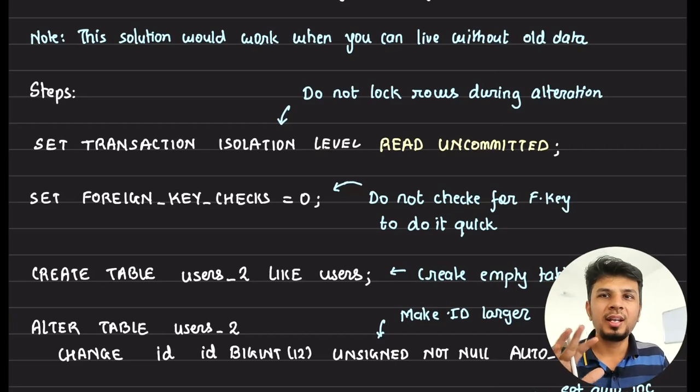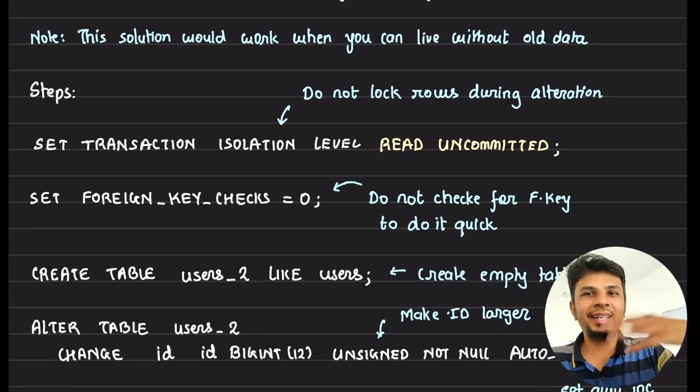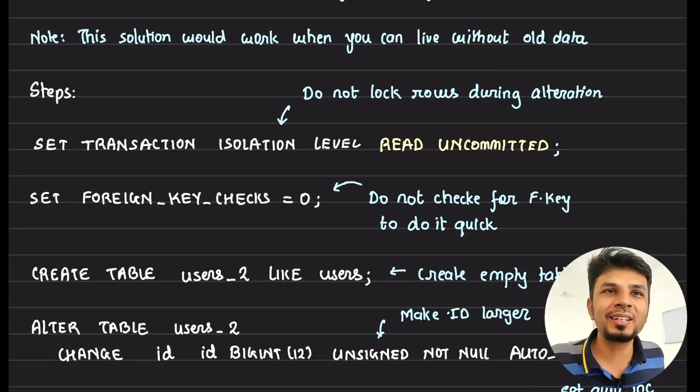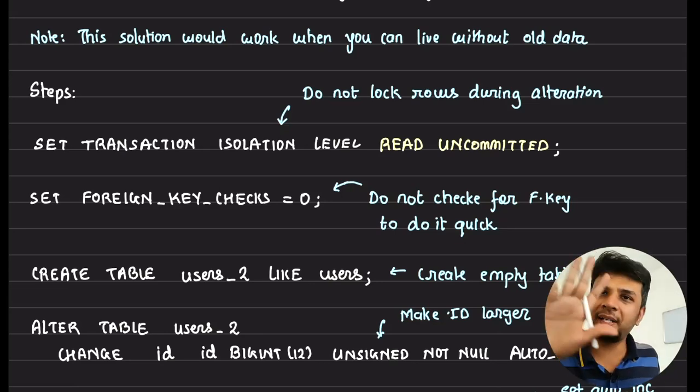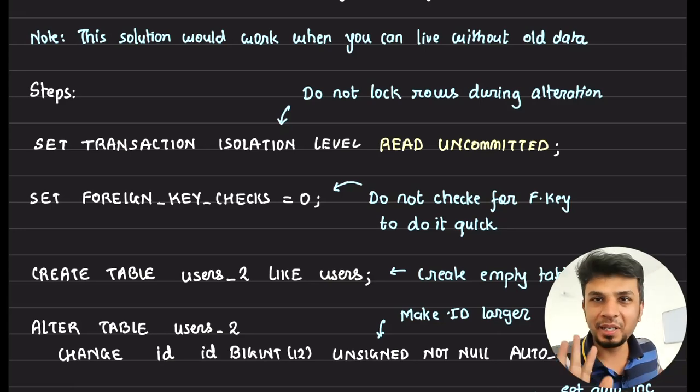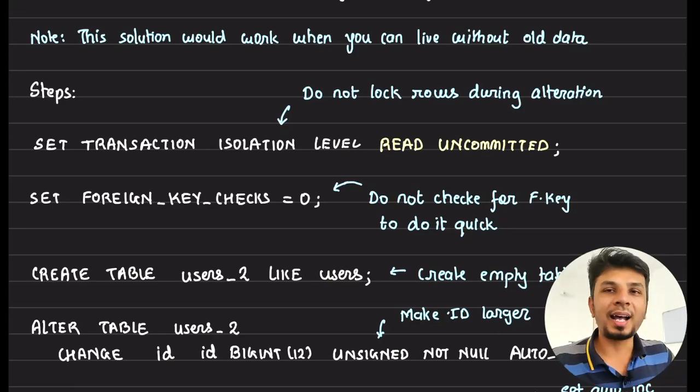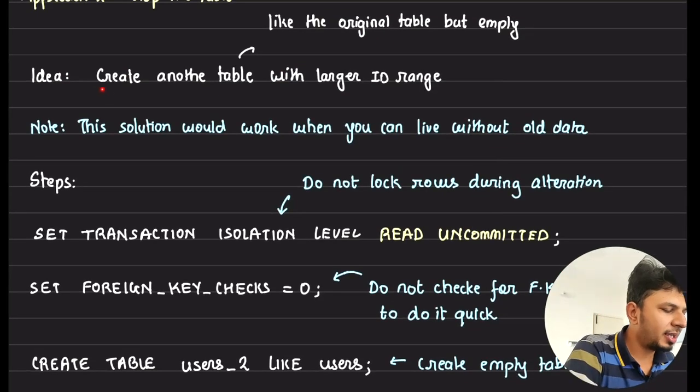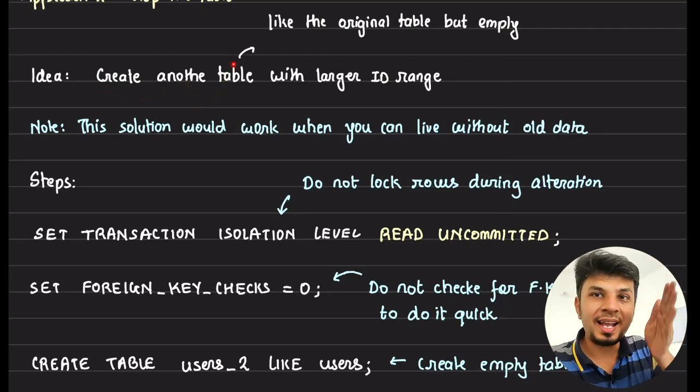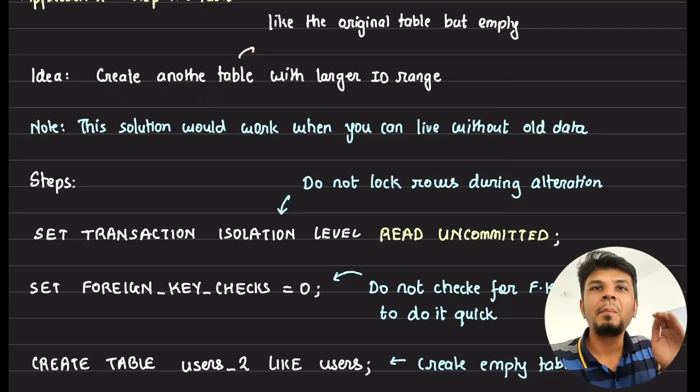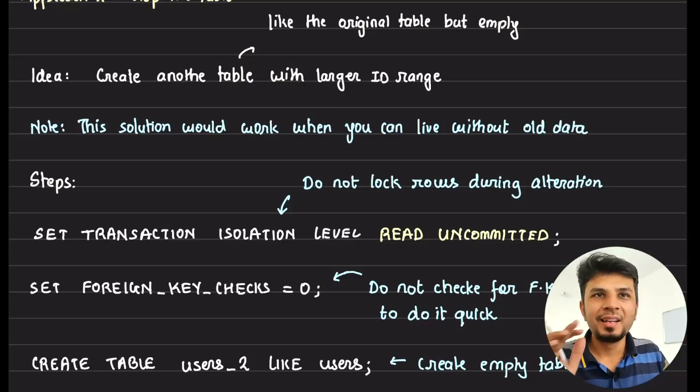Now here, this is an interesting approach, swapping the table. SRE teams, this is like day in and day out thing, to be really honest. Whenever data migration, whenever a big migration is run, whenever a table with large number rows, we typically do this only. Like this is our bread and butter. So the idea here, the core idea here is we create another table with the same structure as the old table, but with a larger ID range. Very simple.